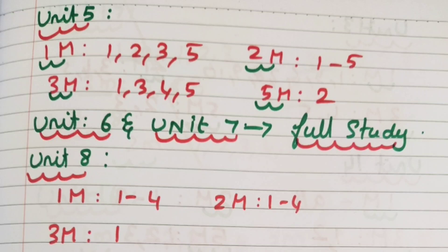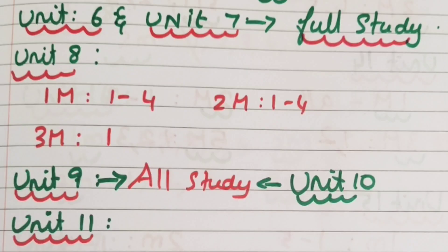Unit 6 and Unit 7 are full — they have to be studied in full with no reduction. If you look at Unit 8: 1 mark is 1 to 4, 2 mark is 1 to 4, 3 mark is 1 in length — that's a short answer.